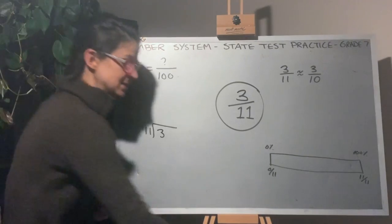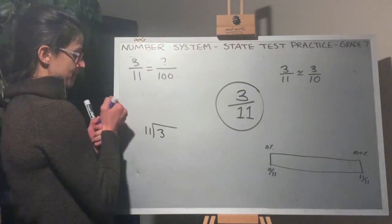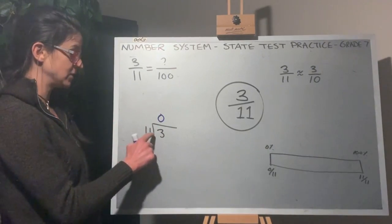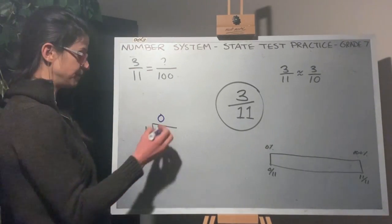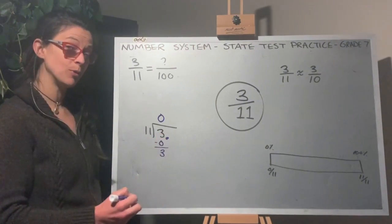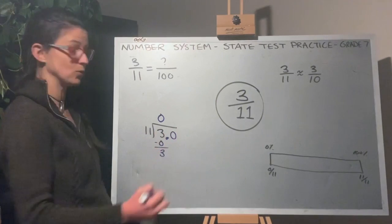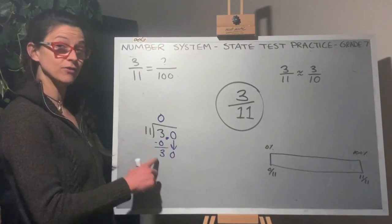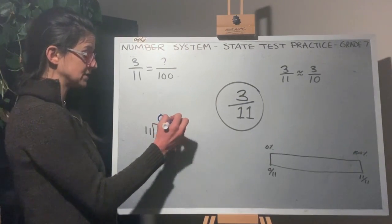Does 11 go into 3? It does not, so I record that 0. 11 goes into 3 zero times. 0 times 11 is 0. I'm left with 3. Now I can put a decimal point after the 3 and add a placeholder 0. Bring down that 0 to form 30. 11 goes into 30 twice.